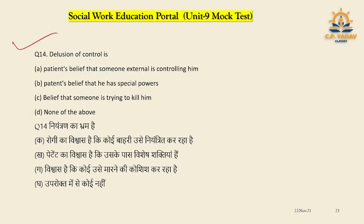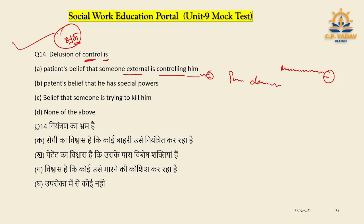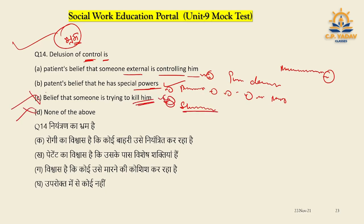Question number fourteen: Delusion of control — the patient believes that someone external is controlling them. Another option is that the patient believes they have special powers. Another is that someone is trying to kill them — but that describes hallucination, not delusion. So the first option — believing someone external is controlling them — is the correct answer for delusion of control.